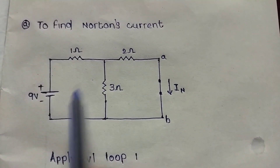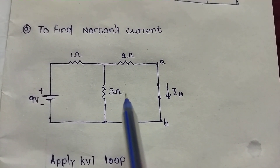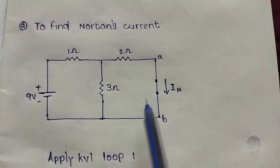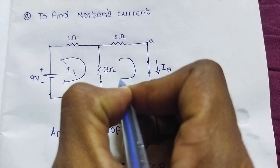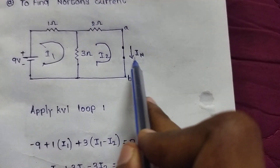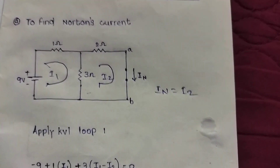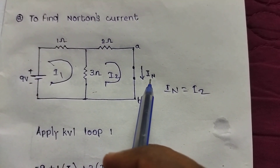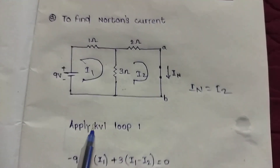We can observe that the circuit contains two loops. We find these two loops and the current in each loop. Using mesh analysis or loop analysis, we assign I1 current in the first loop and I2 current in the second loop. The I2 current direction is equal to IN, so Norton's current equals I2. We apply KVL to I1 and I2.